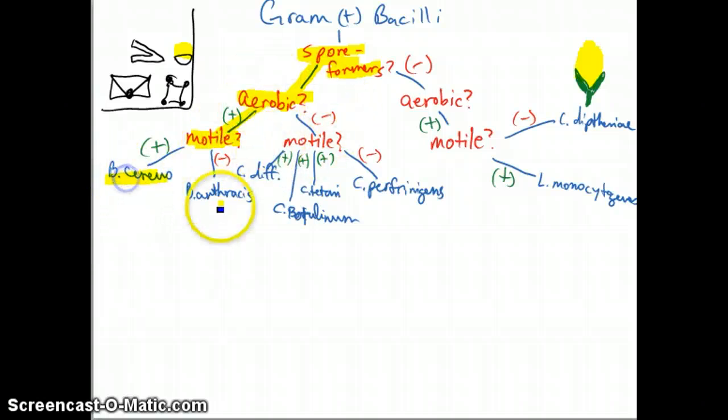So B. cereus and B. anthracis - B. cereus is motile, B. anthracis is not motile. And don't worry, we're going to go over some high yield stuff here in a minute too.